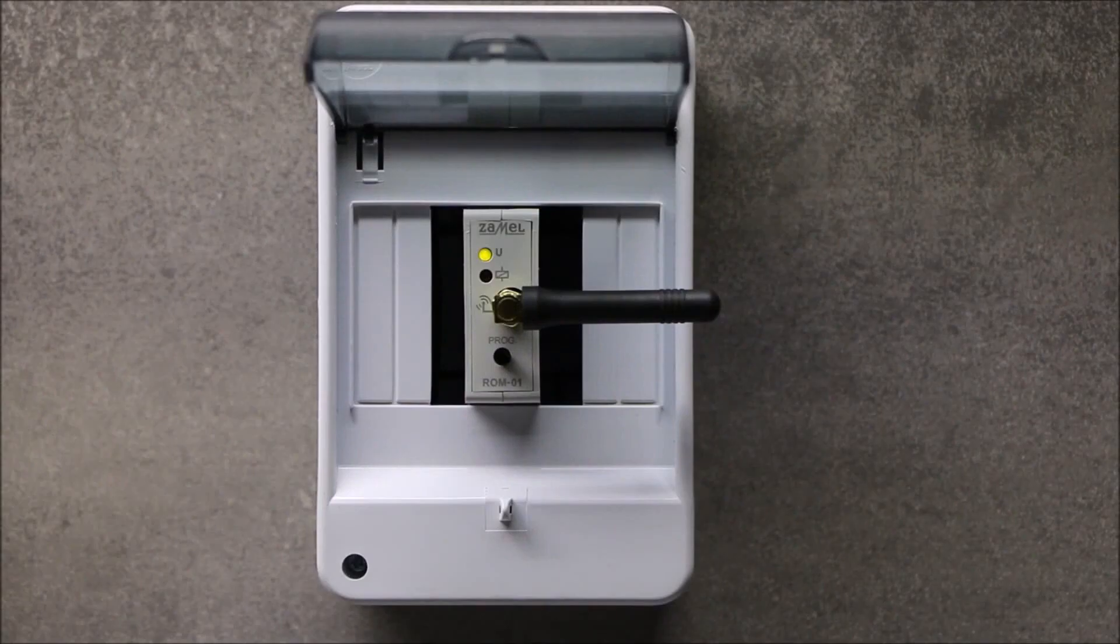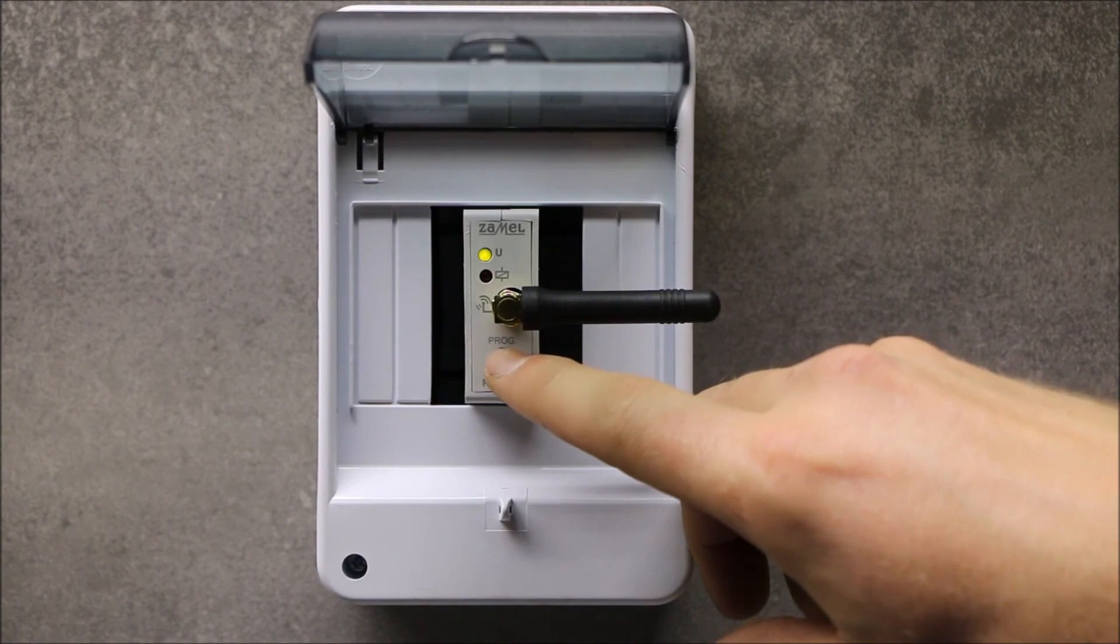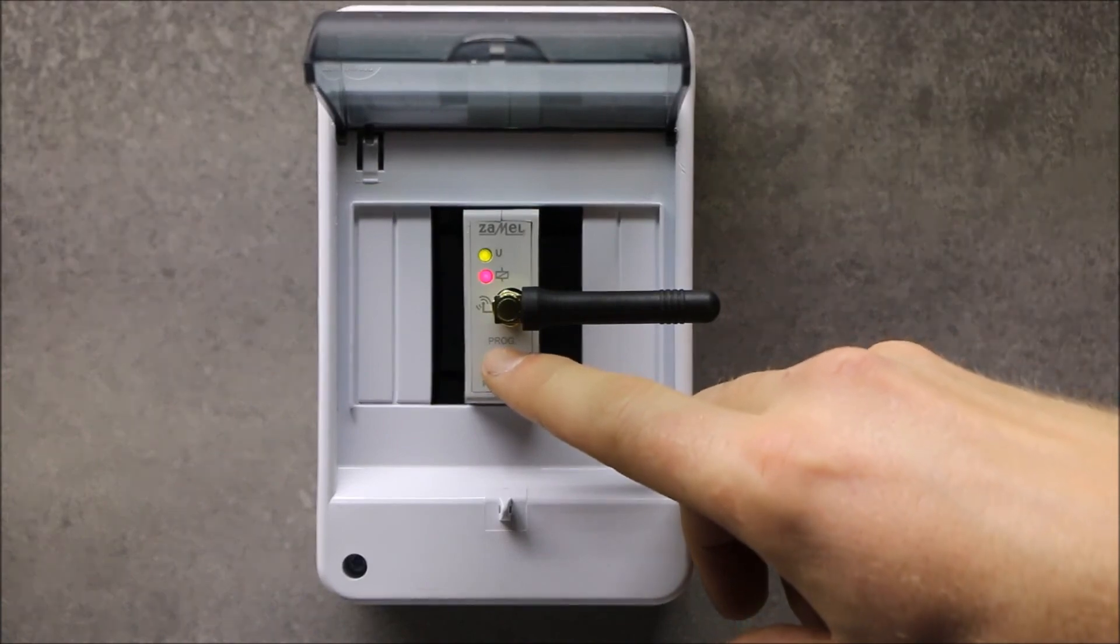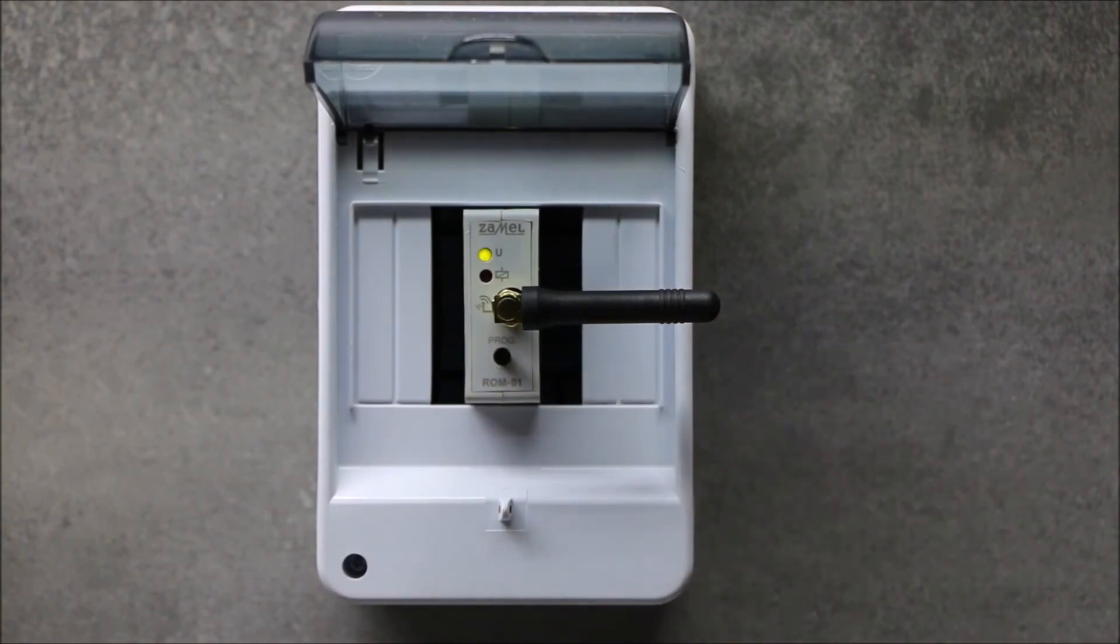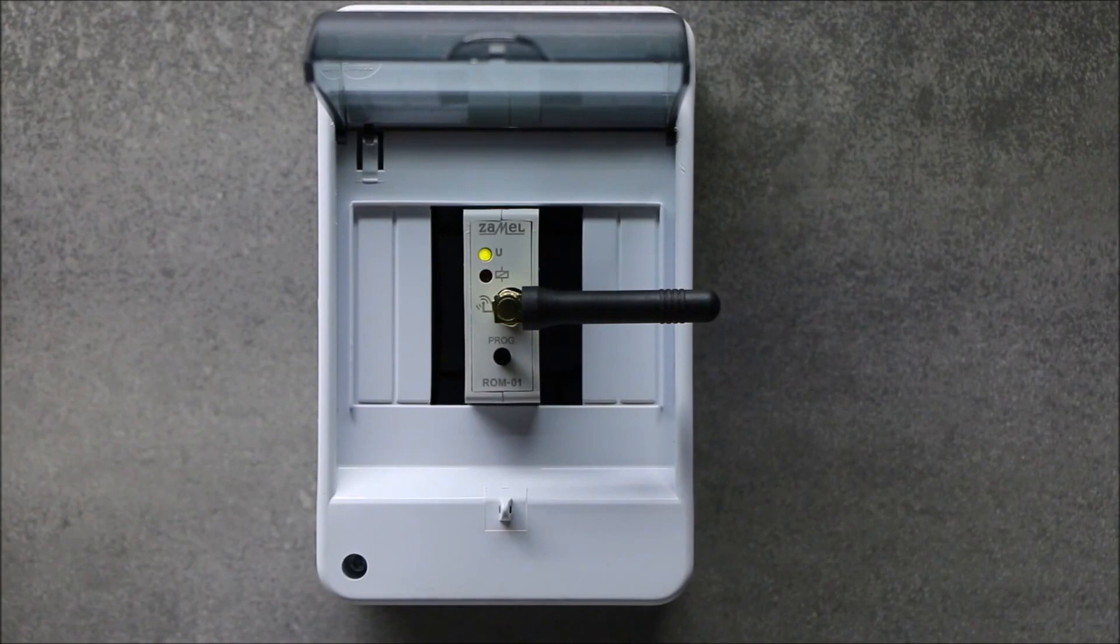In order to clear all remotes from the receiver's memory, press the PROC button for about 5 seconds until the blink of the red LED. As the result of this operation, the receiver's memory is clear now. The programmed time is not cleared.